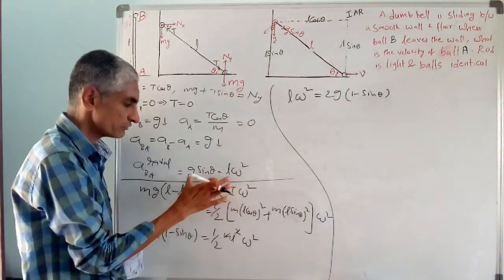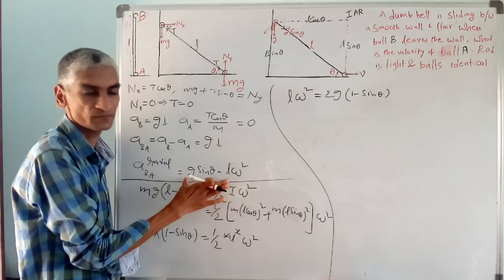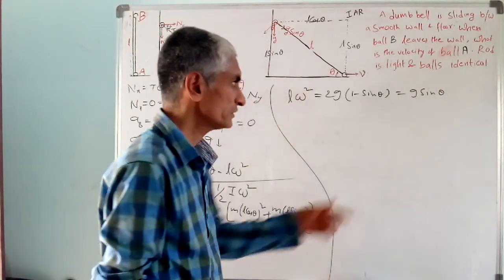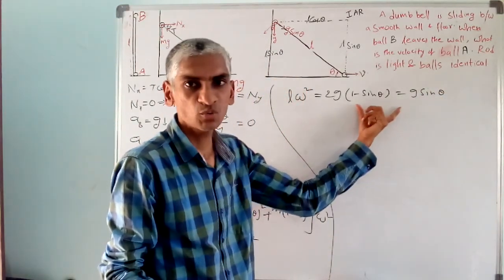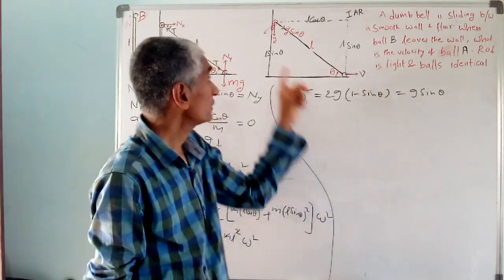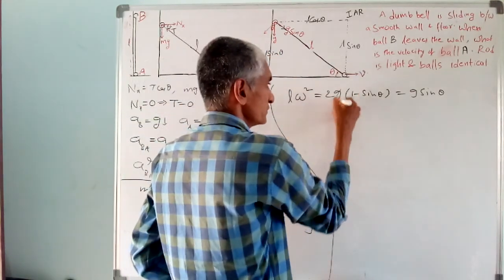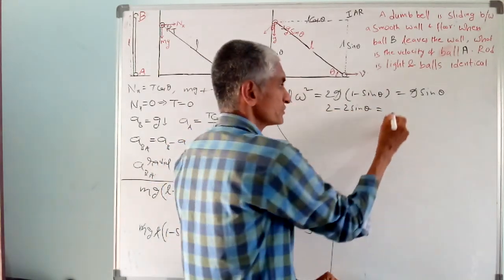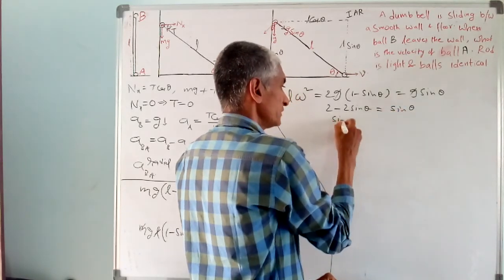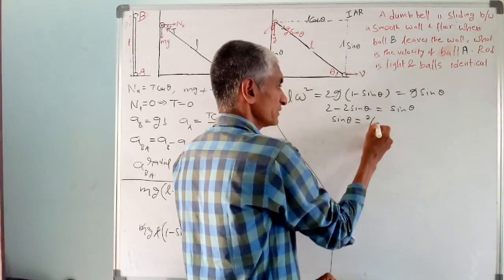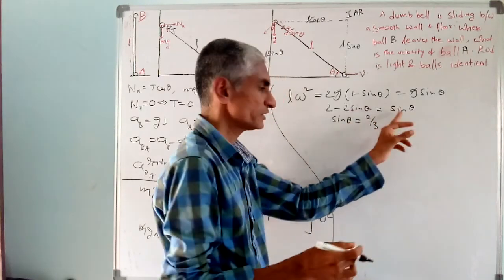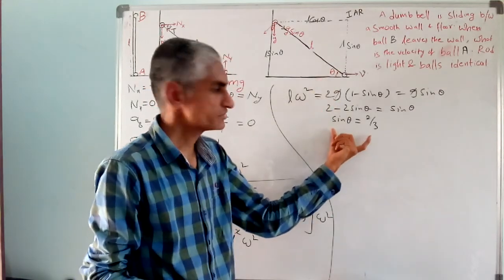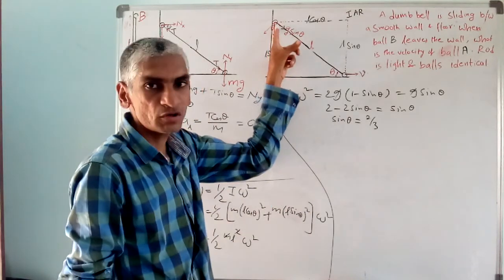Now this L omega squared value has already been found as G sin theta from the centripetal acceleration analysis. Equating the two expressions: G sin theta equals 2G times (1 minus sin theta). Canceling G and multiplying out: 2 minus 2 sin theta equals sin theta, giving 3 sin theta equals 2, so sin theta equals 2/3. This is the angle at which the ball leaves the wall.